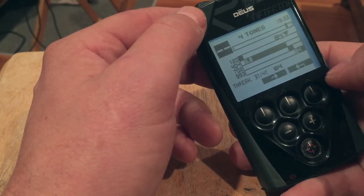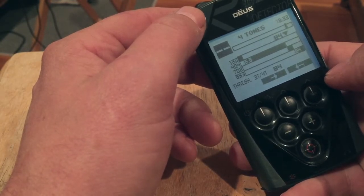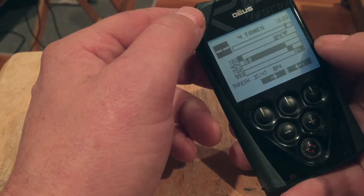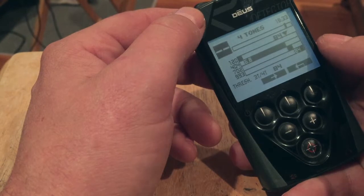Depending on the site I'm at, I'll adjust that up and down a little bit depending on how the DEUS works or how it deals with the mineralization and stuff. But that will allow me to dig deep coins without digging as much trash.